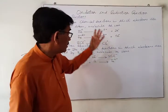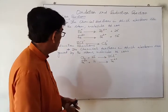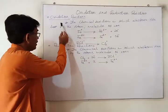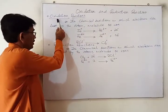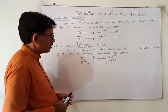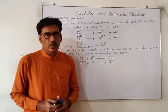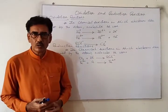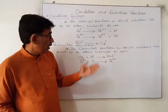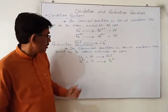In this part of the topic, the first thing we have to look into is the oxidation reaction. The oxidation reaction is that in which electrons are lost by the atom, molecule, or ion, and we have examples of those.